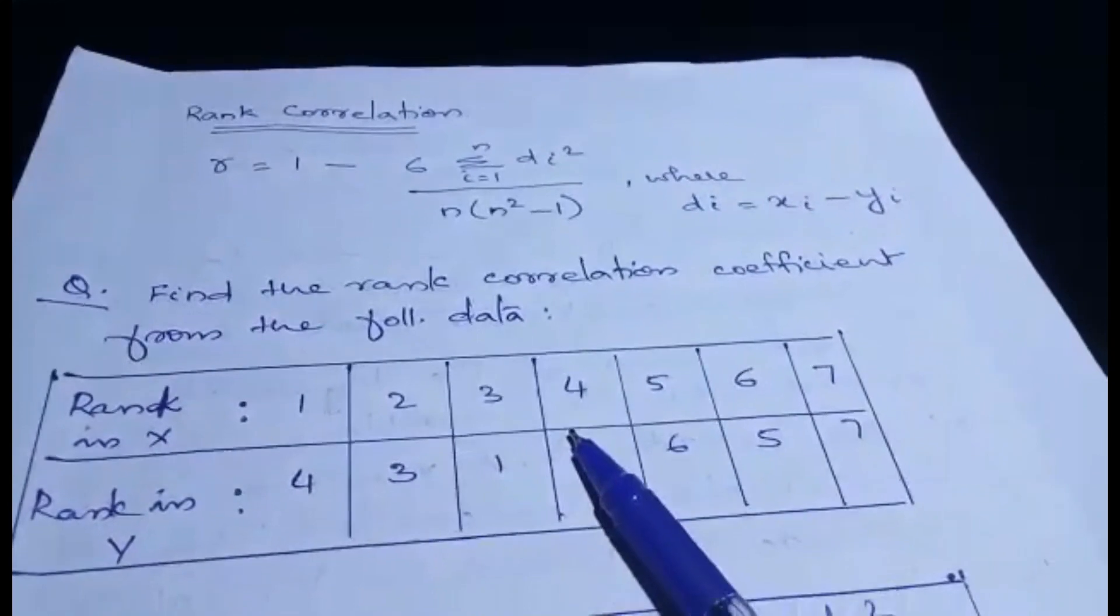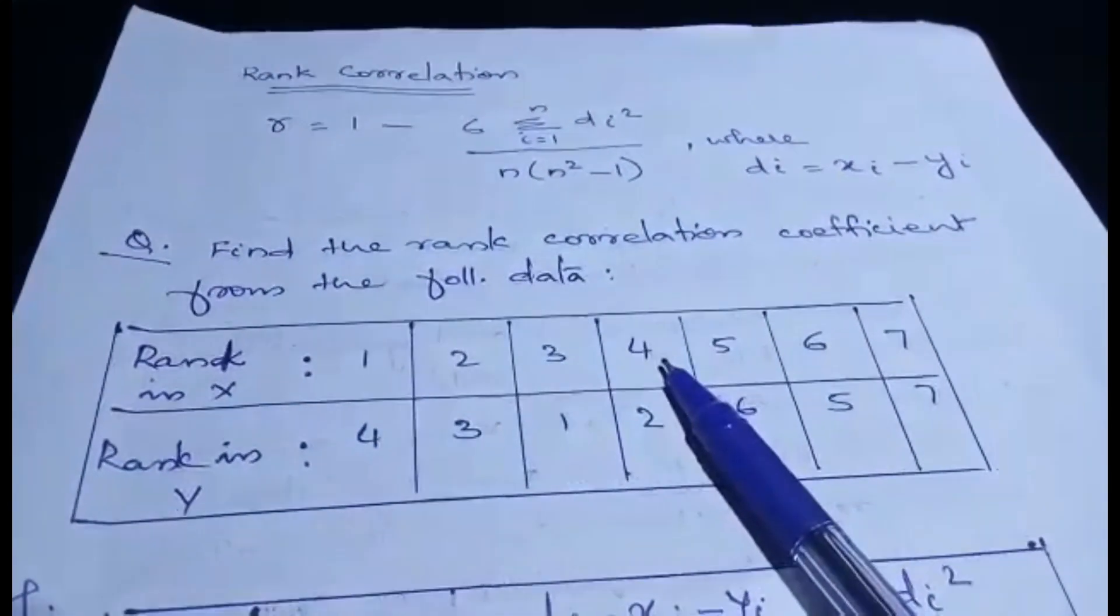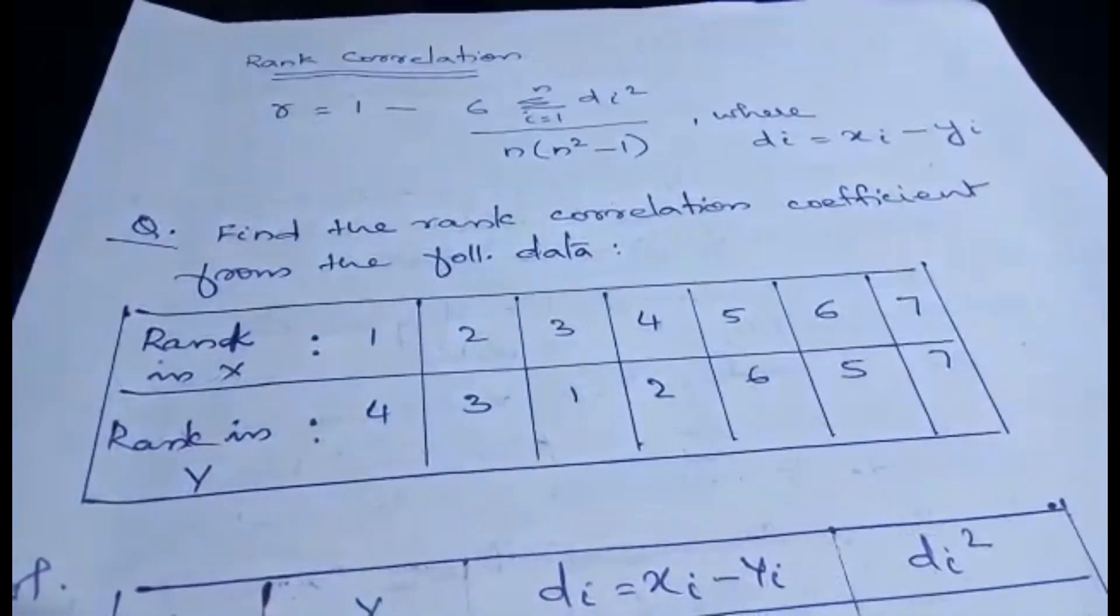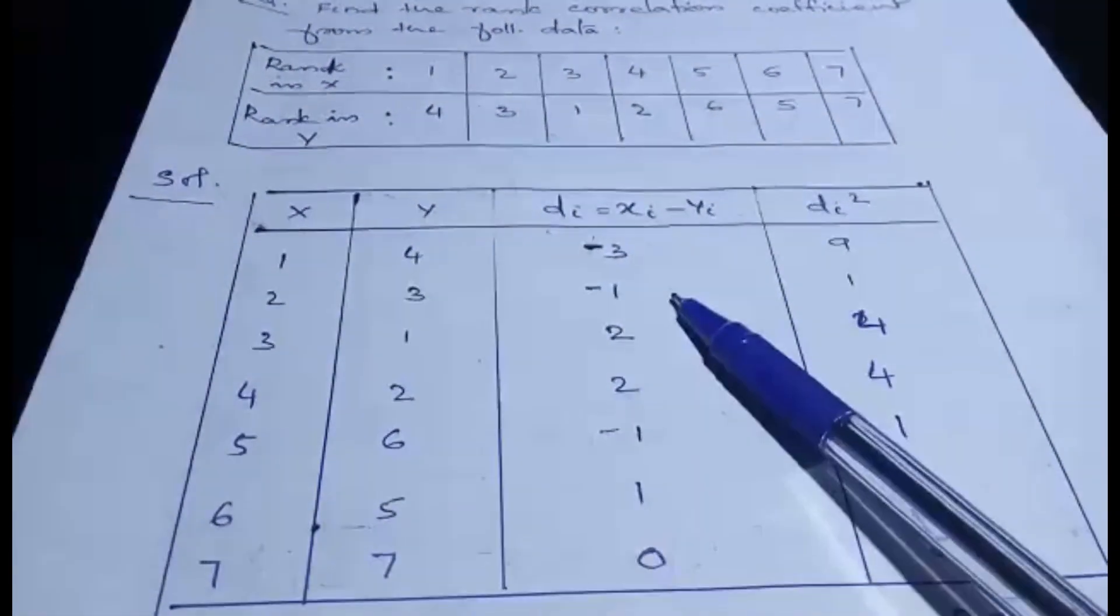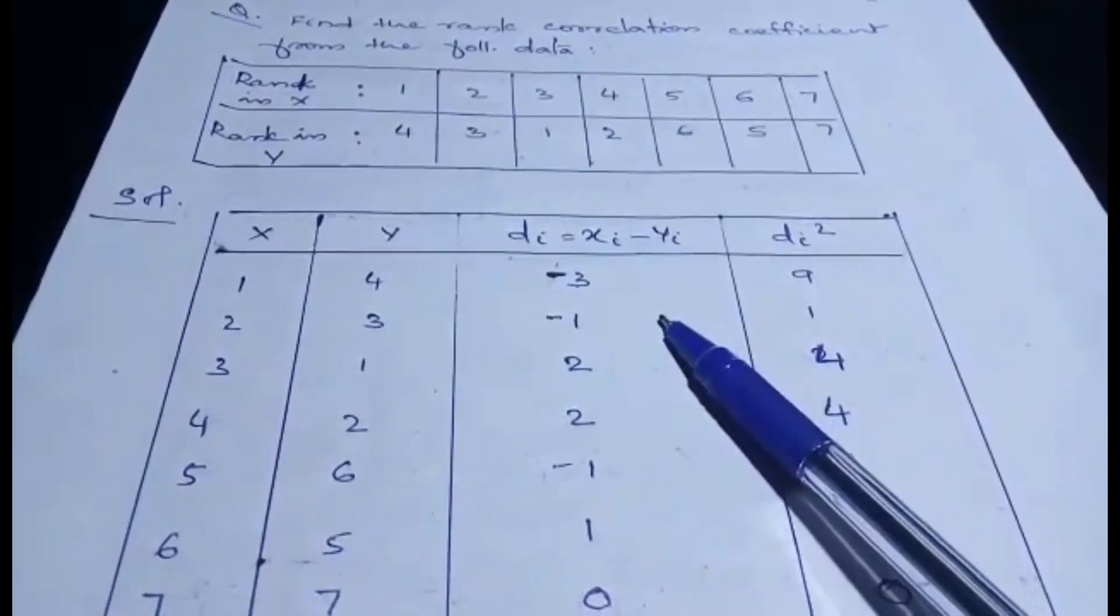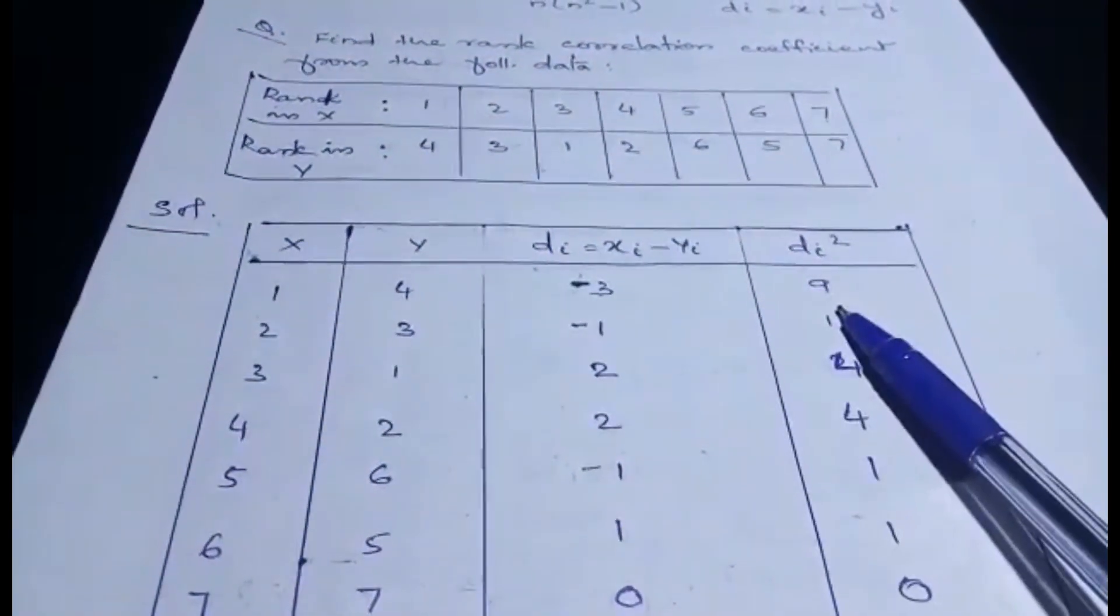So here is a question for you. Find the rank correlation coefficient from the following data. Data is given. Now, make it in the tabular form. Calculate di, which is equal to xi minus yi, and find di square.